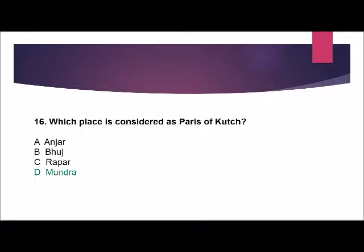Question number 16: Which place is considered the Paris of Kutch? Options are: Anjar, Bhuj, Rapar, or Mundra. The correct answer is Mundra.